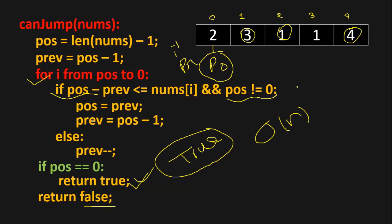The solution takes O(1) constant space complexity since we're only using two variables: position and prev. Hope this concept was clear. If you have any questions or suggestions, let us know in the comments. Thanks for watching, and I'll see you in the next video.